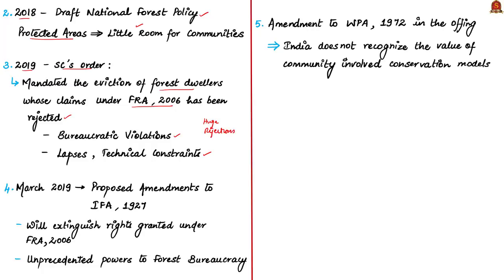In March 2019, a comprehensive amendment to the Indian Forest Act of 1927 was proposed. This amendment introduces provisions for removing the rights granted under the Forest Rights Act of 2006. Further, it grants the forest bureaucracy unprecedented powers like the ability to enter and search premises of forest dwellers on suspicion without a warrant and use firearms to meet conservation goals. The author tells that the state authority usually reserved to tackle terrorism, insurgency and organized crime is now being deployed to safeguard biodiversity.